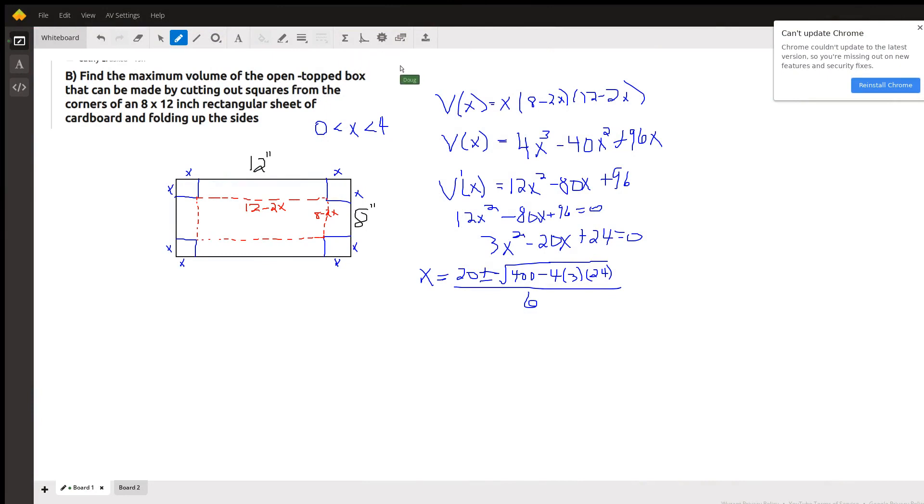Okay, this is a fairly typical maximum or minimum problem in calculus. You've got a sheet of cardboard that is a rectangle, 12 inches by 8 inches. We're going to cut a square out of each corner.